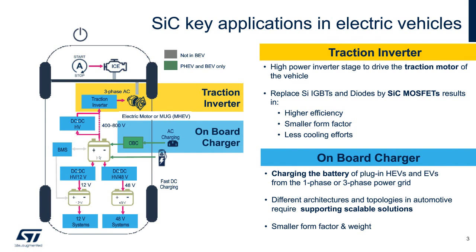Let's look at the basic block diagram of an electric vehicle. The core of the electric vehicle is the large high-voltage battery needed to store power and to provide power. The battery is a DC power block — it takes DC in to be charged and takes DC out to deliver the power. The first power conversion happens in the traction inverter.